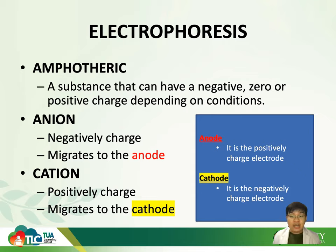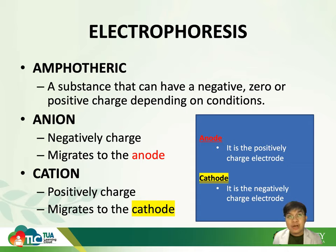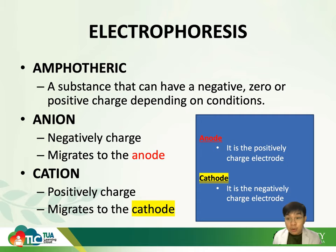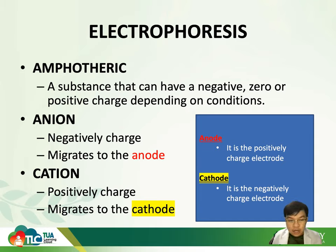A perfect example of an amphoteric molecule is your proteins. Depending on the isoelectric point and pH of a particular solution, they can be positively or negatively charged. Amphoteric means a particular molecule can be positive or negative according to a particular condition — one at a time. That is different from a zwitterion, which is a molecule that has both positive and negative charge at the same time. Remember the distinction between amphoteric and zwitterion.